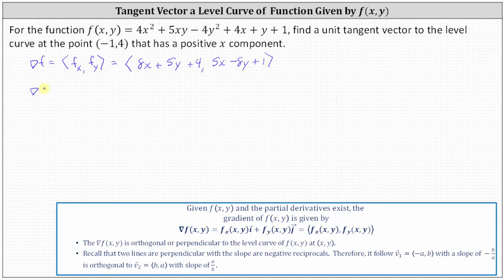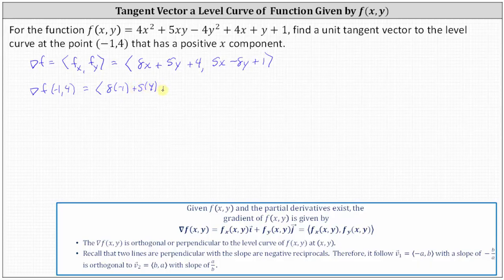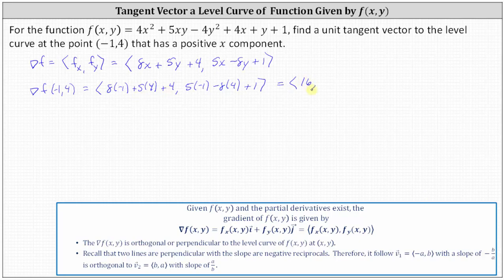Now we evaluate the gradient function at the point negative one comma four, which gives a normal or perpendicular vector to the level curve at that point. The x component is 8 times negative 1 plus 5 times 4 plus 4, which equals negative 8 plus 20 plus 4, giving 16. The y component is 5 times negative 1 minus 8 times 4 plus 1, which is negative 5 minus 32 plus 1, giving negative 36.